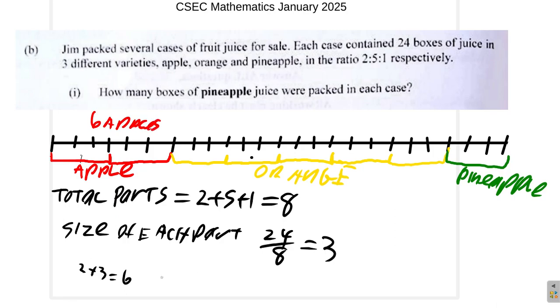And then, oranges. Since it's 5 parts and the side of each part is 3, 5 times 3, which is 15. So, here, you have 1, 2, 3. Yeah. 1, 2, 3, 4, 5, 6, 7, 8, 9, 10, 11, 12, 13, 14, 15 oranges. All right? So, for oranges, that's 15.